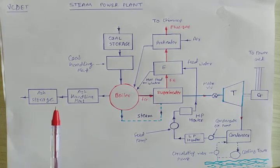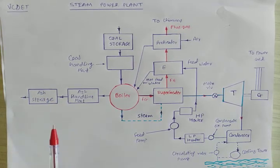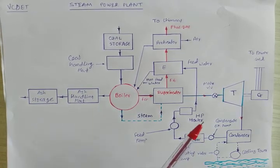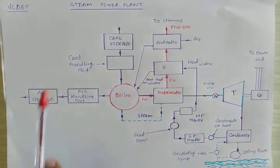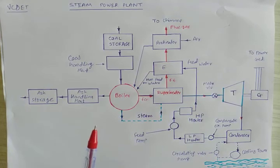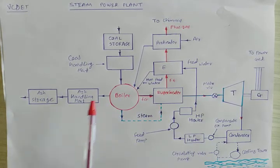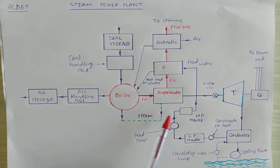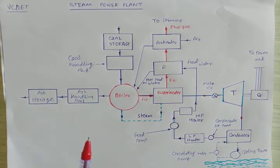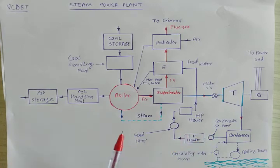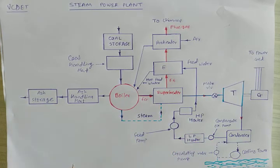In this way, the steam power plant — or modern thermal power plant — works on four circuits: coal and ash circuit, air and gas circuit, feed water and steam circuit, and the cooling water circuit.